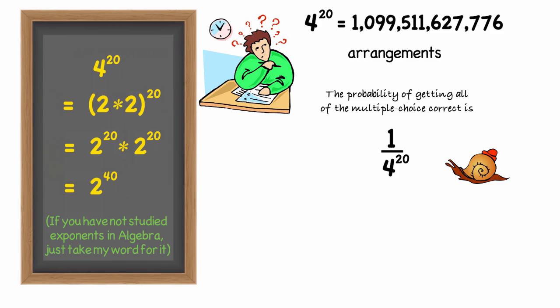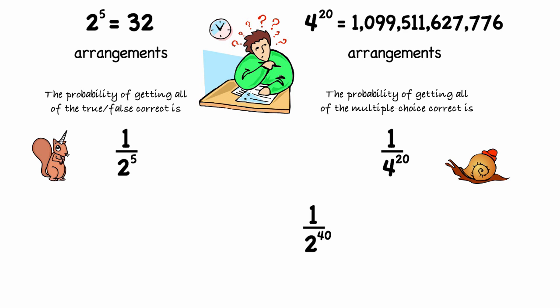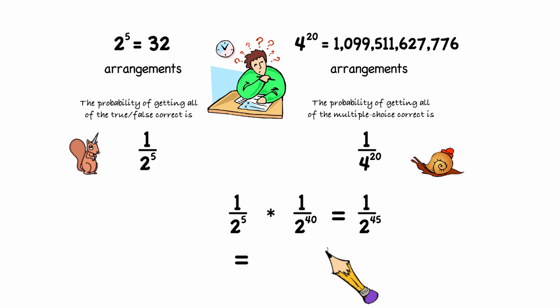4 to the 20th could also be written as 2 to the 40th. And I'm going to do that because when I want to multiply those together, if my bases are the same, I can simply add my exponents. So, the probability of guessing a perfect paper is 1 over 2 to the 5th times 1 over 2 to the 40th, or 1 over 2 to the 45th. So we have one chance in 35,184,372,088,832.